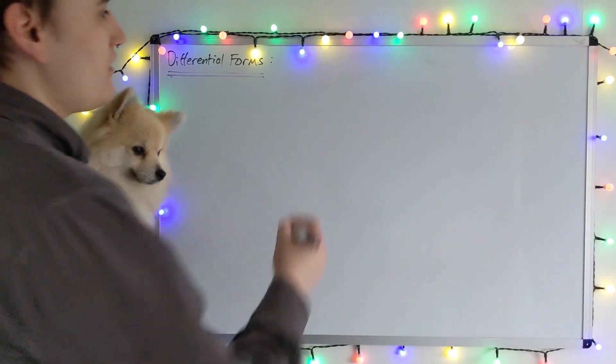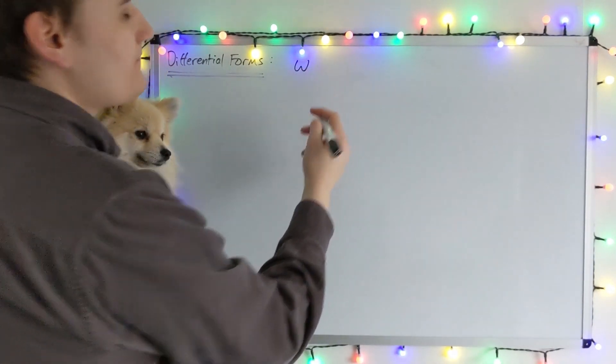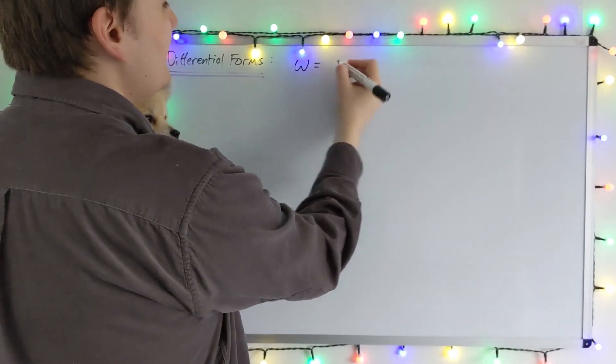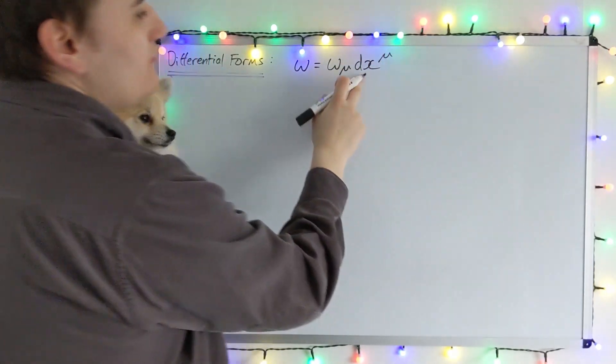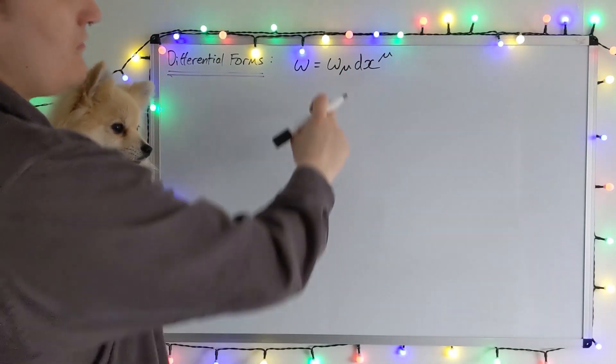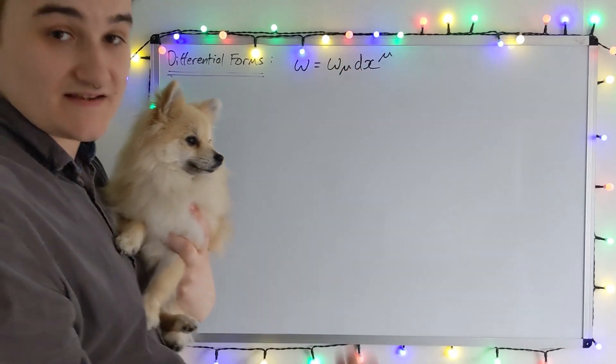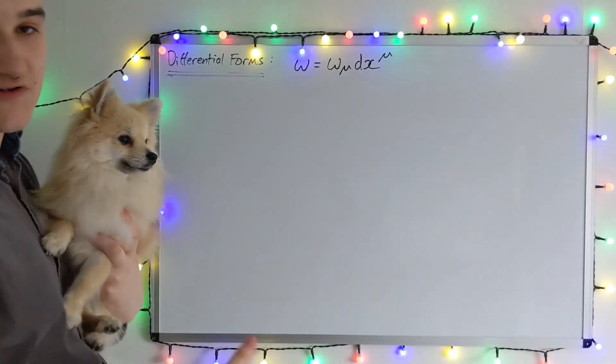I'll remind you that a one-form omega we could express as the linear combination of the one-form basis vectors, which we understood as being the exterior derivative of our coordinate zero forms.